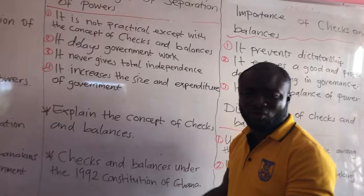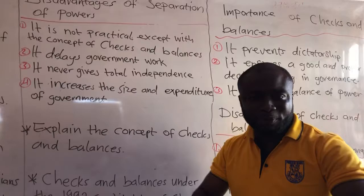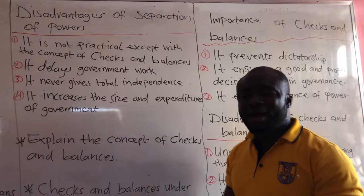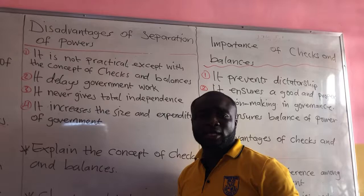Another disadvantage is that it increases the size and expenditure of government. Why can't the executive prepare their budget for the year and approve it themselves? But rather they have to prepare the budget and send it to parliament. All this involves cost to the state, so the government spends more money in the administration of the state.